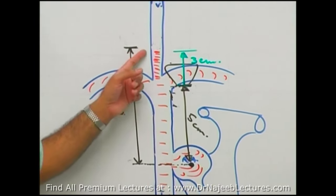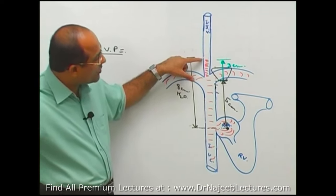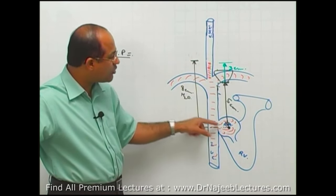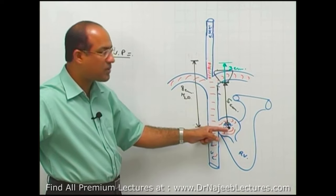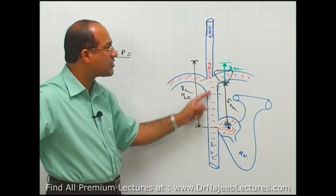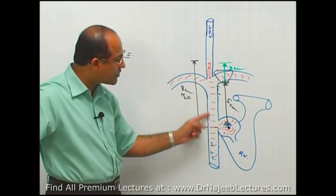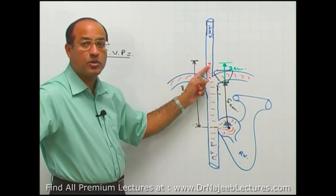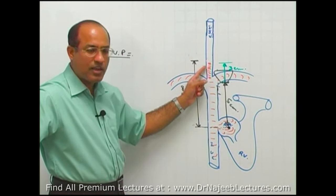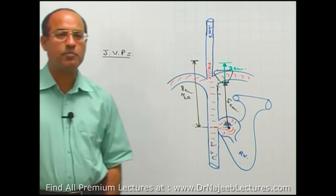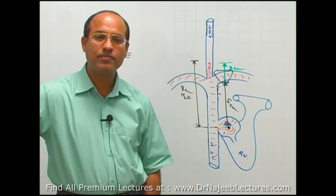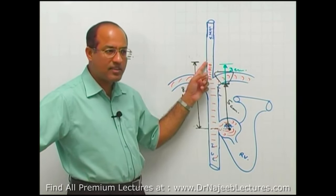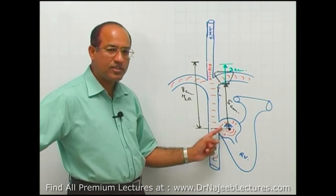Jugular venous pulsations and pressure are so important because the internal jugular vein communicates through the superior vena cava up to the right atrial cavity, and there is no valve in between. So all the pressures and pulsations present in the right atrium are very faithfully transmitted into the internal jugular vein. This means the internal jugular vein acts as a biological manometer applied to the right heart - more truly, attached to the right atrium - measuring pressure changes and pulse patterns of the right atrium.